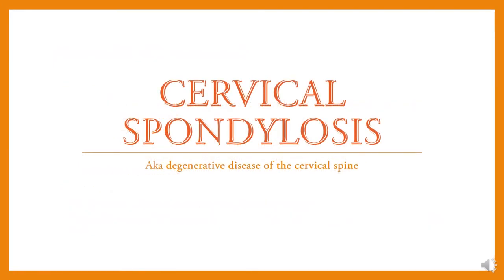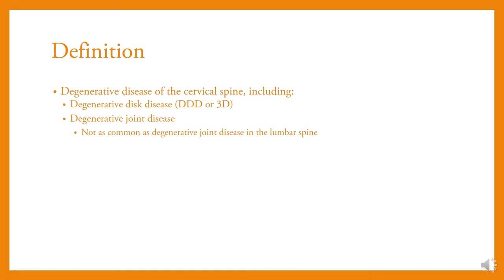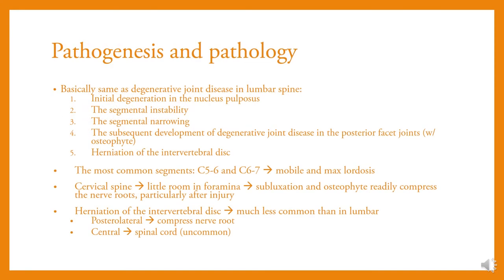Cervical spinal disease is defined as degenerative disease of the cervical spine, including degenerative disc disease and degenerative joint disease. It follows the same sequence as lumbar spine DJD: initial degeneration of the nucleus pulposus, then segmental instability, segmental narrowing, subsequent development of DJD in the posterior facet joints, and herniation of the intervertebral disc. The most common segments affected are C5-6 and C6-7. There is little room in the foramina; subluxation and osteophytes can radially compress the nerve root, particularly after injury. Herniation of the intervertebral disc is much less common than in the lumbar spine; it may cause posterolateral compression of a nerve root or central spinal cord compression.